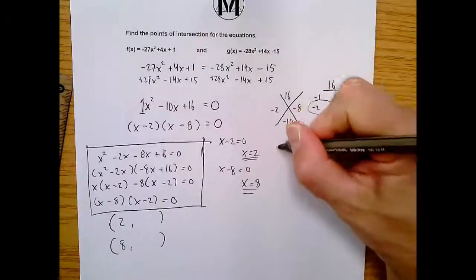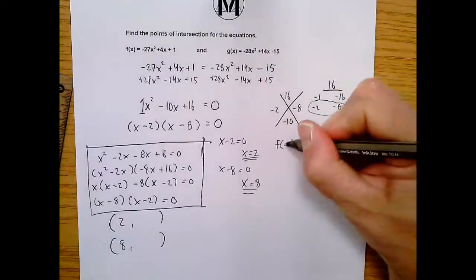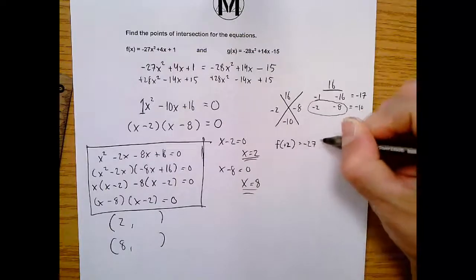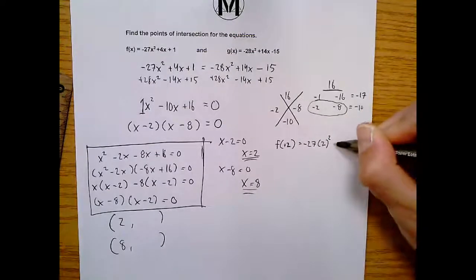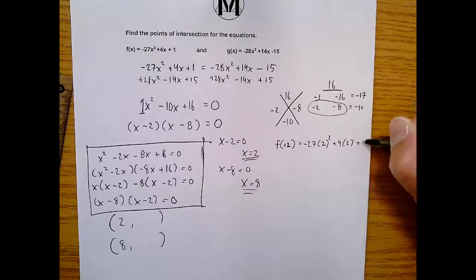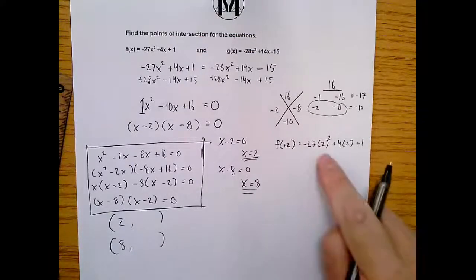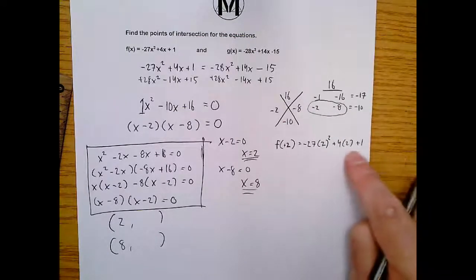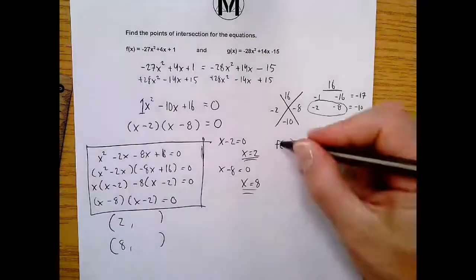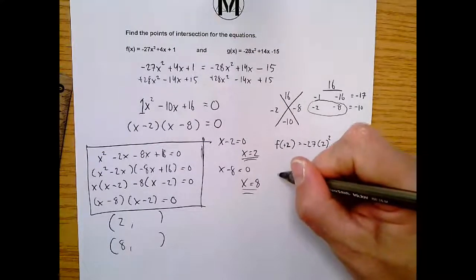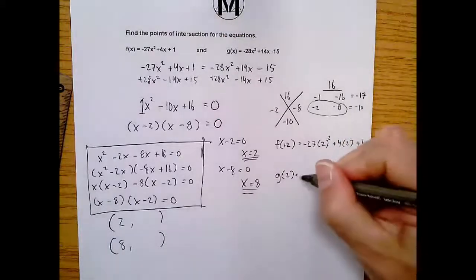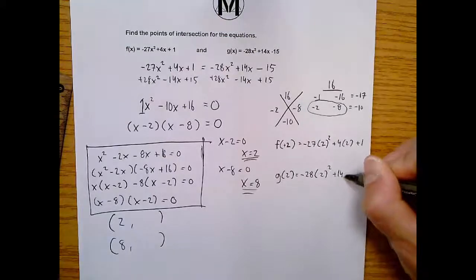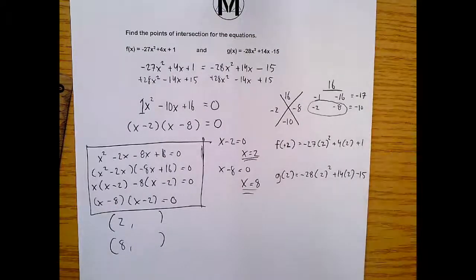So if you wrote this out, it would be like saying f of 2 is -27(2)² + 4(2) + 1. And I really do encourage you guys to substitute those in or input those in with parentheses, because then you can actually just put that all directly into your calculator and get that answer. So this is f(2). And then we can do g(2). Same idea, -28(2)² + 14(2) - 15. Okay, so here we go.